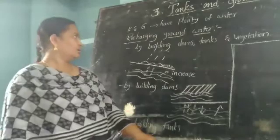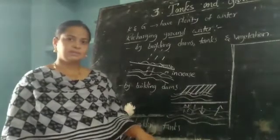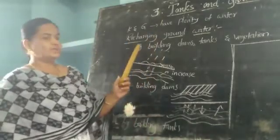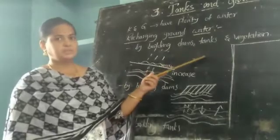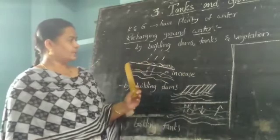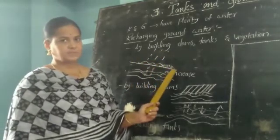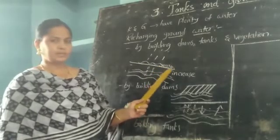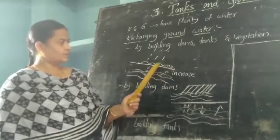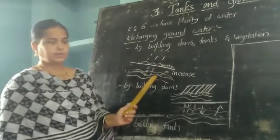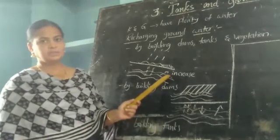Next is recharging groundwater. Recharging means increasing the groundwater levels. We can recharge or increase groundwater by building dams, tanks, and vegetation. Vegetation means planting grass or plants. For example, on soft ground, rain water flows very fast. If we plant grass on that soft ground, it can reduce the speed of the water, so that water slowly percolates into the soil and joins the groundwater, automatically increasing groundwater levels.